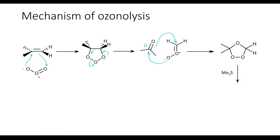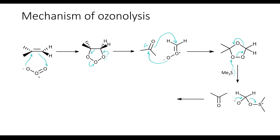At this stage, dimethyl sulfide is introduced, whose lone pairs attack one of the oxygens. This results in the cleavage of the oxygen-oxygen bond as well as the cleavage of the carbon-oxygen bond. This produces one ketone and an intermediate. In the intermediate, the lone pair electrons of the oxygen come down to make a double bond, and this oxygen falls off and leaves with the dimethyl sulfide. As a result, we get our final products — one of which is going to be a ketone, and the other is an aldehyde, which depends on what our starting material was.